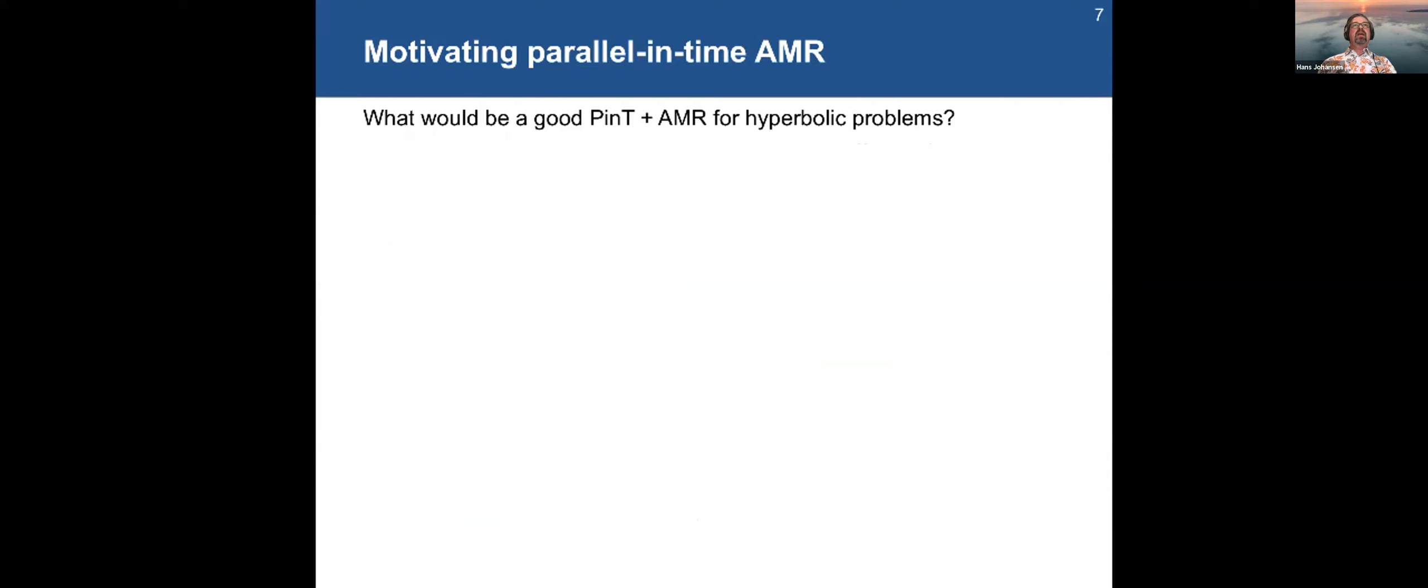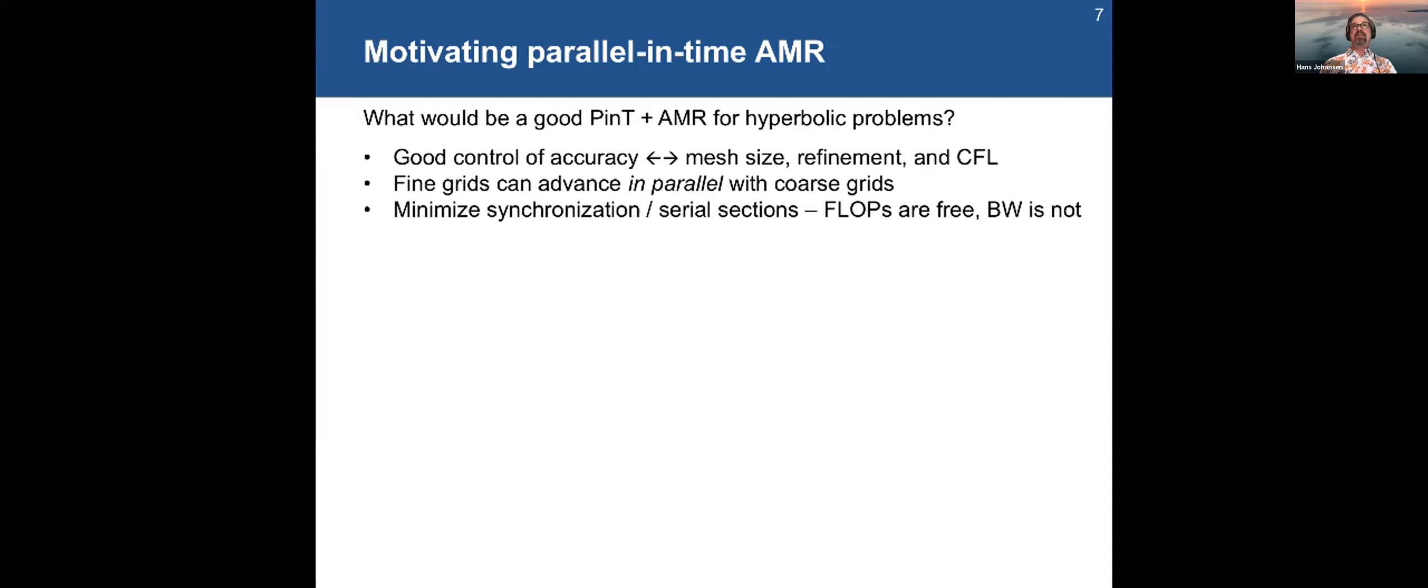So what would be a good way of attacking this? So if we had parallel in time and AMR for hyperbolic problems, we'd want to get good control of the accuracy. We can do that with respect to mesh size and refinements, and we would like the fine grids to advance in parallel with the coarse grids. A lot of people like the, Rob gave a great talk on M-Grit and X-Grade and how it could do that. I know that's the point of MLSDC and PFAS, so there are lots of approaches to try to do that, but I also need to minimize the synchronization here. The theme in computational science right now is that the flops are completely free, but as soon as you start moving memory along, or God help you, if you move it off node to another node, you're in trouble. So the bandwidth is not free after all. In fact, it's the thing that you should be paying most attention to. And as long as I'm hallucinating, why don't I say that, like everyone else likes to say, I want to use, I don't want to change anything else. I want my science to stay the same and use the same integrators and solvers.